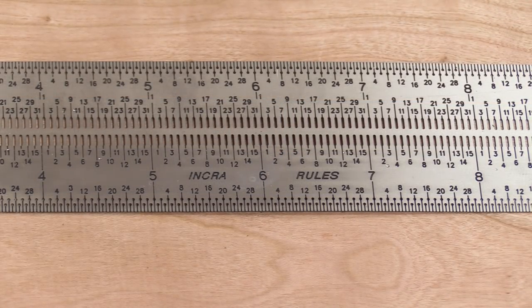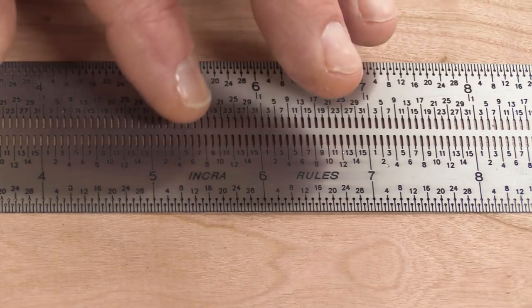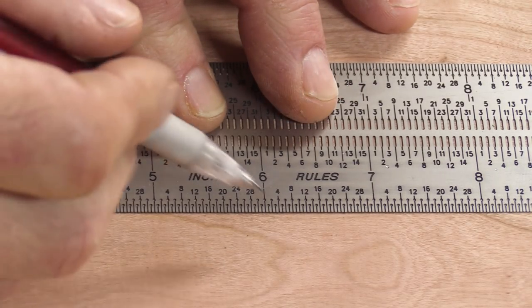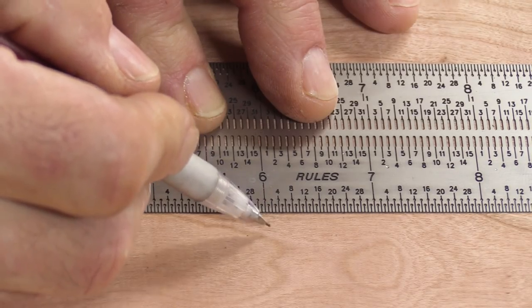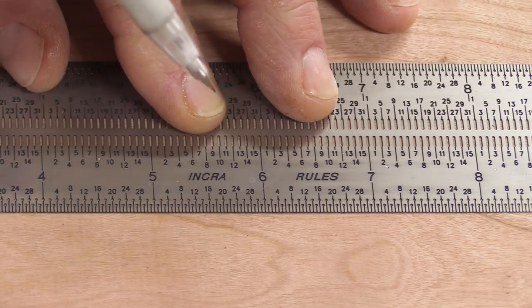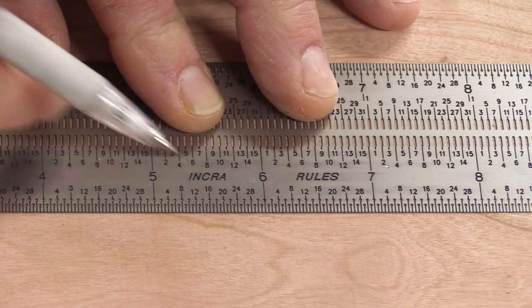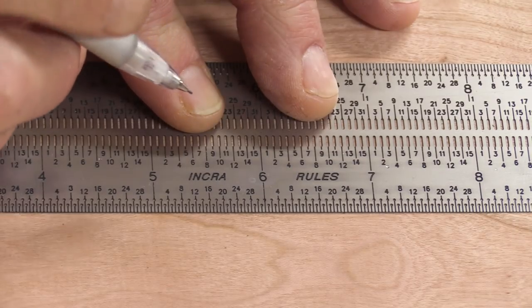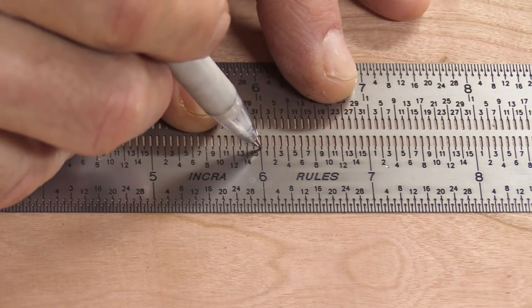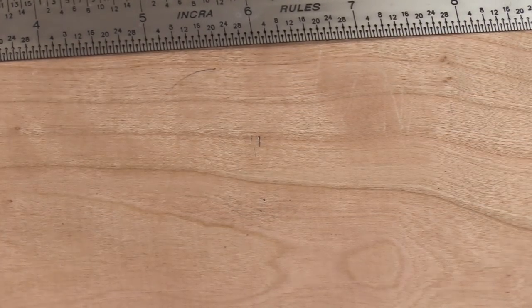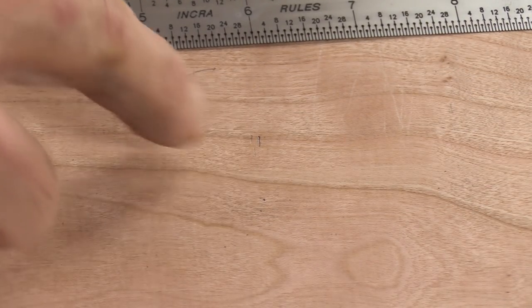Let's make that same mark at 6 inches with the Inker rule. First of all the ruler lays flat so there's no chance of it parallaxing. Second, instead of putting the pencil in front of it, I'm going to take the pencil stick it in the hole for 6 inches, give it a little twist, and now I know that is exactly at 6 inches. There's also a little slot up here where I can make a mark, and I've got two perfectly placed marks at 6 inches.